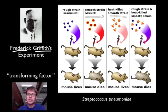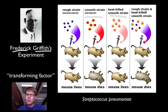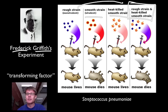He then took this evil smooth strain of Streptococcus, heat-killed it by heating it up, and found that when he injected that heat-killed strain into the mouse, the mouse was good to go. Then came the discrepant event: when he took the rough strain, which normally doesn't hurt the mouse at all, and mixed it with the heat-killed smooth strain, which also normally doesn't hurt the mouse at all, the mouse died.